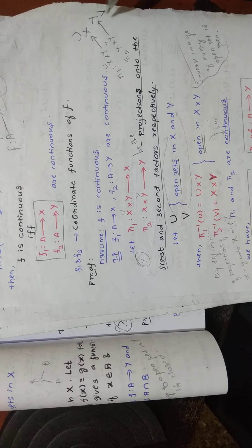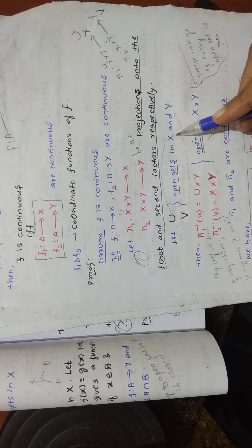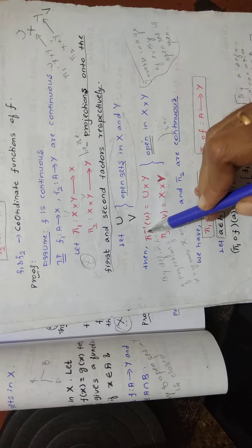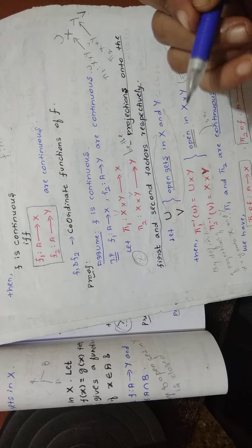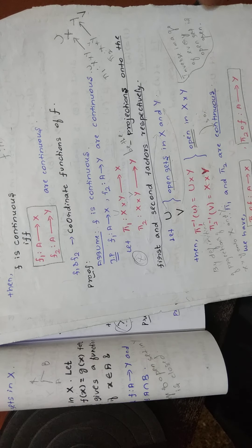Then we take an open set U from X and an open set V from Y. Let U and V be open sets in X cross Y. By the definition, we can write π₁⁻¹(U). I will tell you a shortcut trick so you don't forget or get confused when writing in the exam.